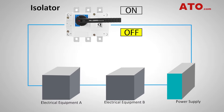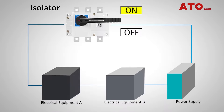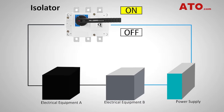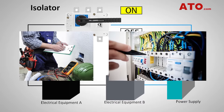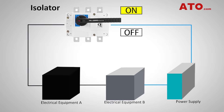An isolator is a manually operated mechanical switch that isolates electrical equipment when it needs to be repaired or inspected as part of a regular maintenance schedule for safety reasons. It is used to ensure that the whole or a specific part of the circuit is completely de-energized for service or maintenance. It is also called a disconnector or disconnecting switch.